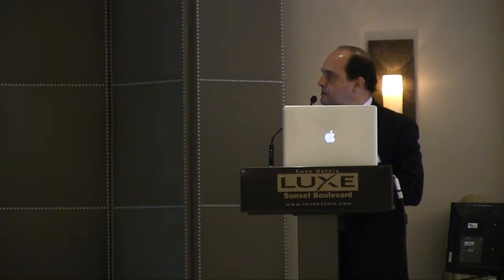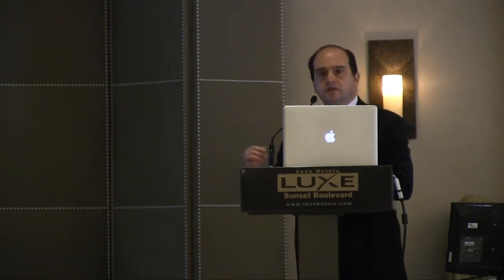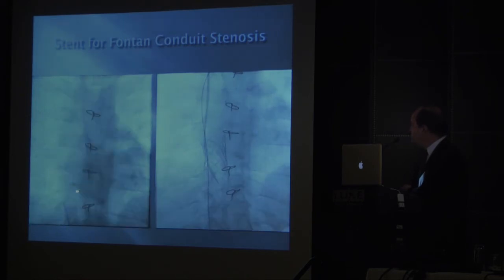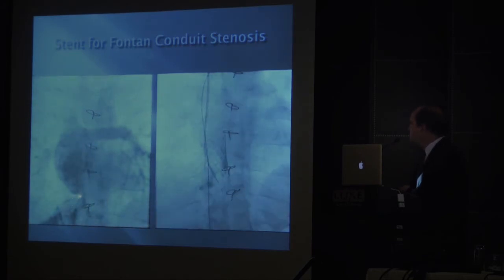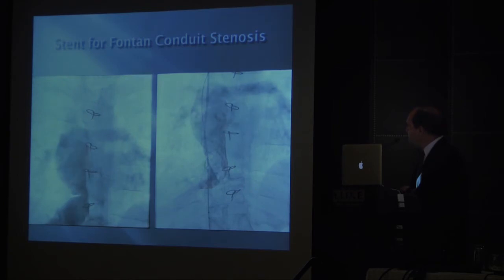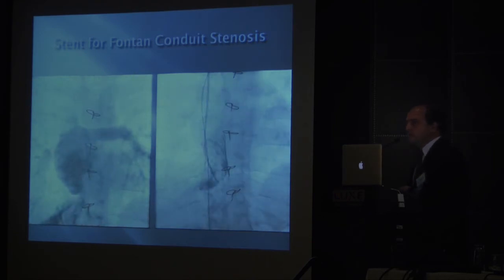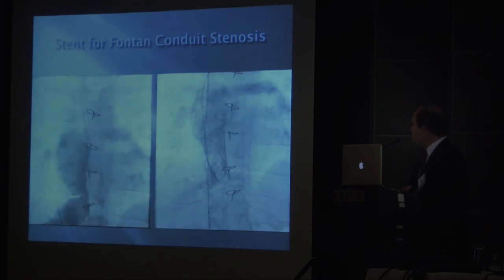We're finding more and more patients with Fontans when we cath them later in adulthood. We've found some that have had obstruction within their Fontan. The gradient across this area is not very significant under general anesthesia with the patient lying down, but with activity, without general anesthesia, this would probably represent an even more significant hemodynamic obstruction. This is all the venous drainage from the lower body and liver. We're particularly concerned about Fontan patients' propensity to develop liver cirrhosis long-term. A large stent was placed at that site relieving the obstruction.